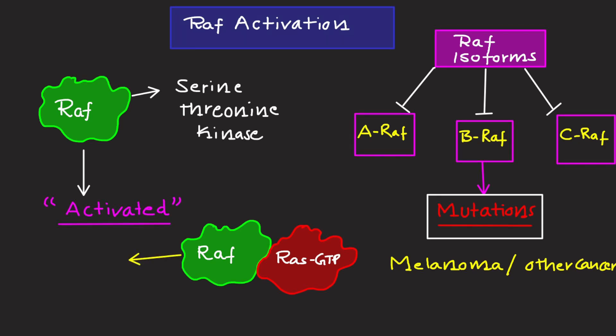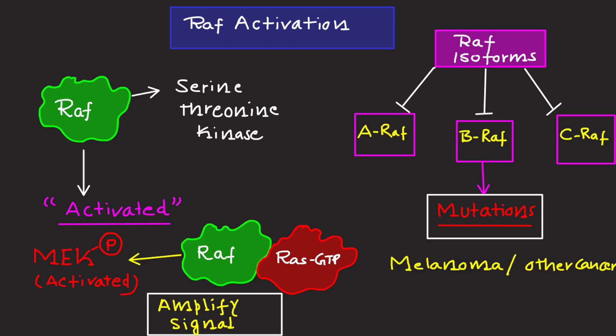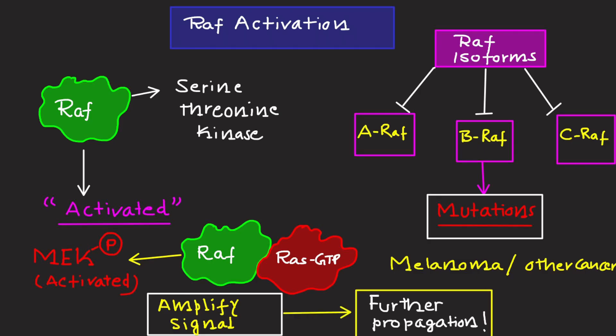In melanoma and other cancers, BRAF has been found to be mutated, and those mutations contribute to cancer progression. Activated RAF phosphorylates MEK, triggering its activation. This step amplifies the signal and primes the pathway for further progression.